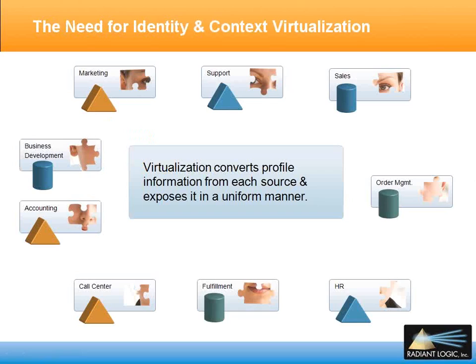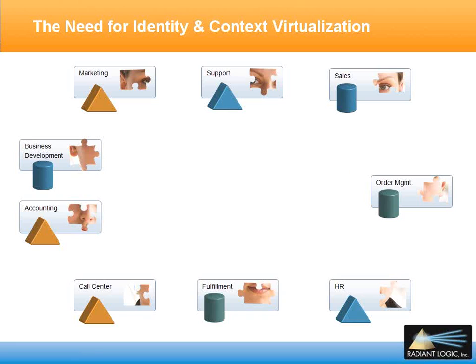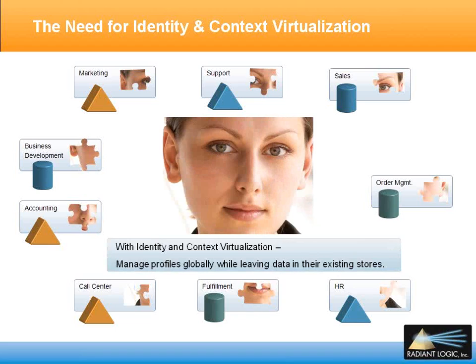As a first step, virtualization allows you to at least see the pieces of the identity stored in each data source. Each local store contains certain aspects that can contribute to the global profile — it's like a puzzle with each piece representing a component of an identity. With identity and context virtualization, you have the ability to piece together the puzzle. This allows you to manage the complete global profile while allowing local data sources to maintain control over their individual piece of the identity. The philosophy behind identity and context virtualization is to manage globally and act locally, built on an architecture that takes the best aspects of both meta and virtual directories.